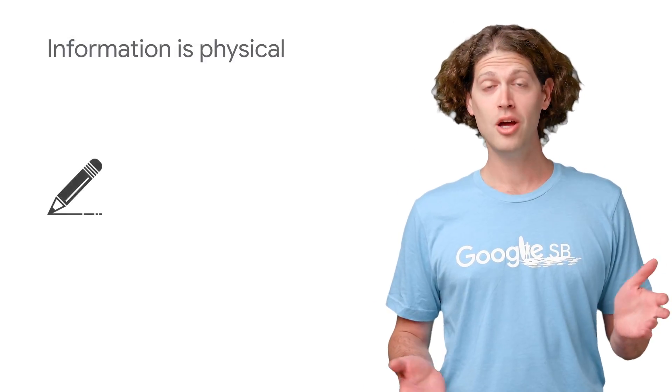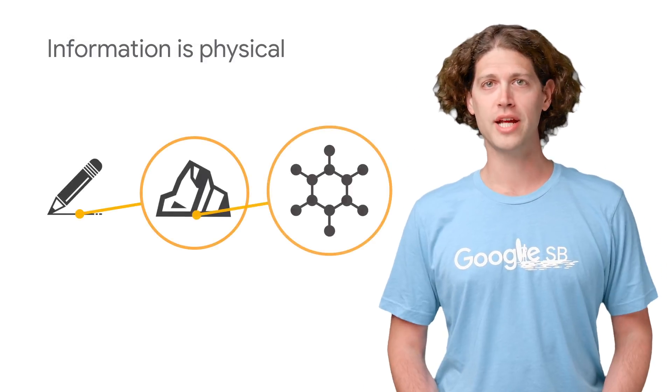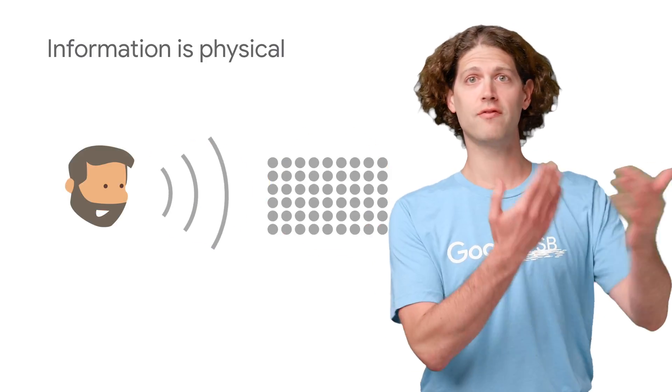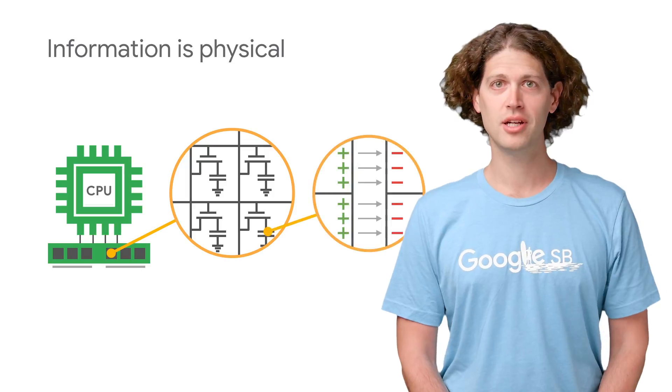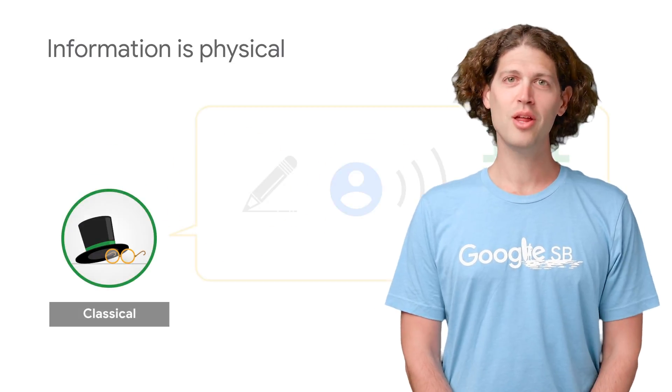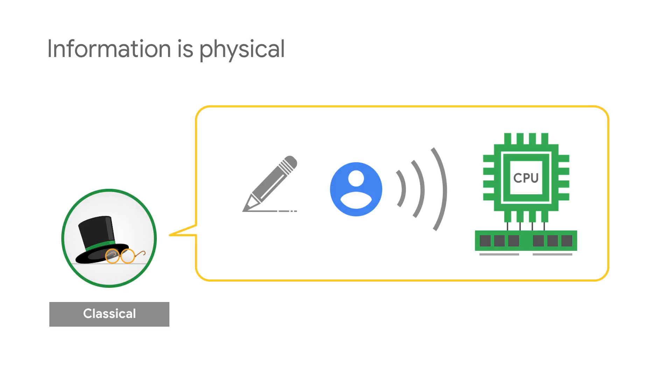Information is physical. Written letters are carbon grains on paper. Spoken words are vibrations of air molecules. Computer bits are electric charge. Each of these examples shares a common limitation. They work under physics that was understood in the 1800s, known as classical physics.